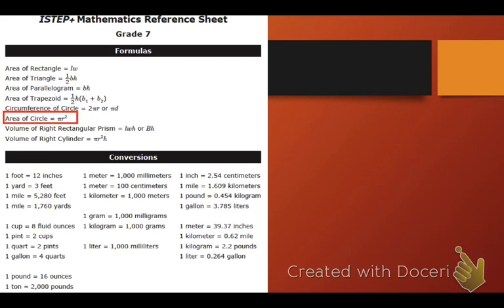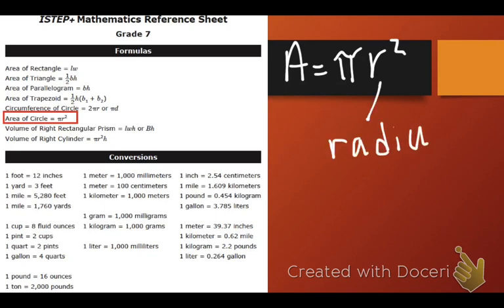But at the top of your paper, I would like you to write A equals pi R squared. And R stands for the radius. I would make a note of that as well.